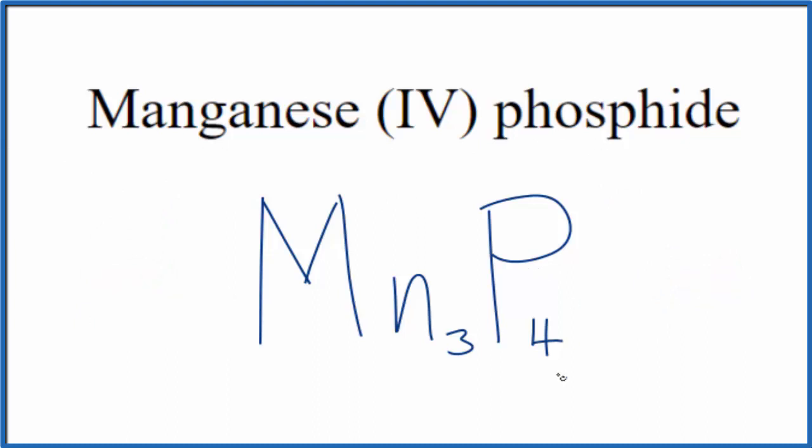So this is the formula for manganese IV phosphide: Mn3P4. This is Dr. B, thanks for watching.